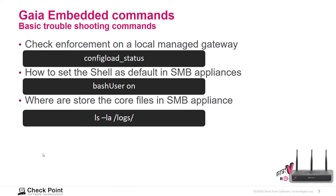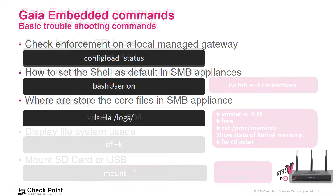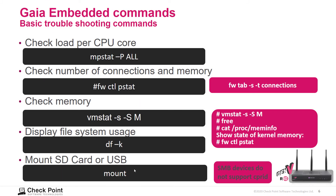If you want to change the default shell on the appliance, you need to run the bash userspace on command. If you want to check some of the core logs, visit the /logs folder. To check load per CPU core, run the mpstat command. To check the number of connections and memory, use fwctl psstat. To check memory and more information, use the vmstat command. You can display file system usage with the df command.